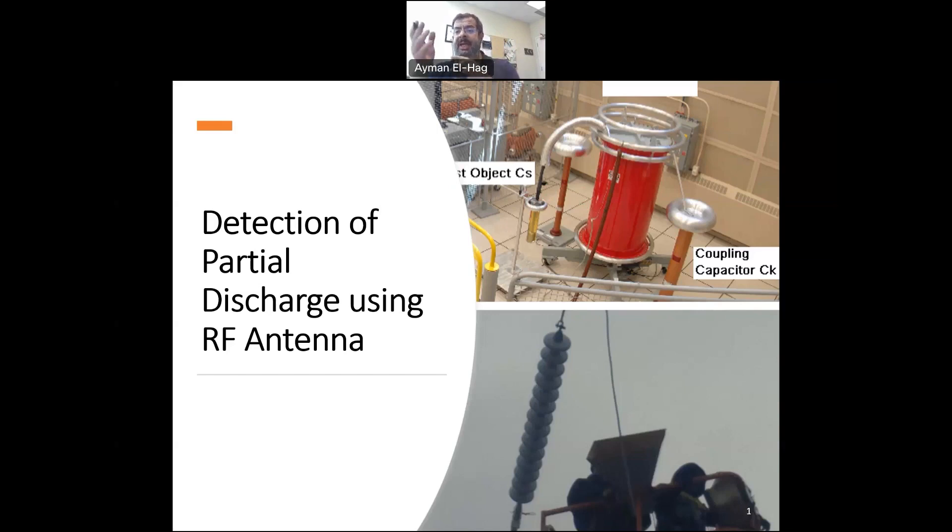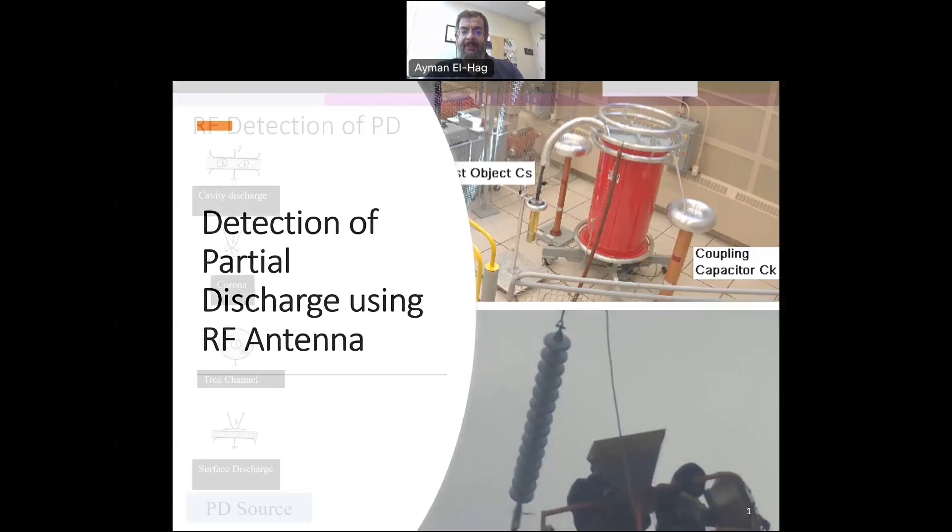So let's see how the antenna can detect partial discharge, what should be the design criteria for the system to detect partial discharge using an RF antenna, what are the pros and cons of using the RF antenna, and then finally I will take you to the lab and I will do a simple demonstration to show you how we can measure the partial discharge using the RF antenna.